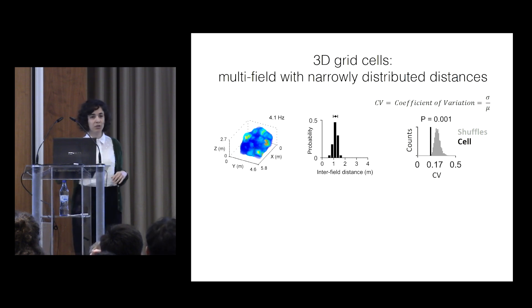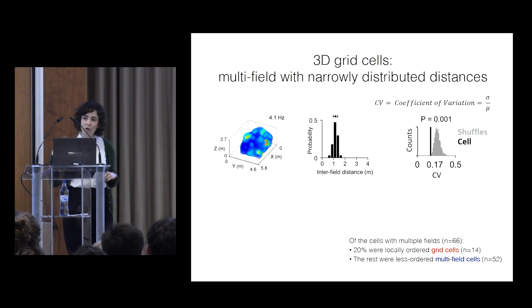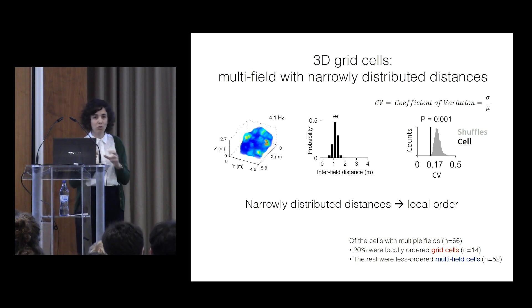And this cell's coefficient of variation is significantly lower than that of a thousand shuffles, where we just randomly shuffle the spikes. Out of all the cells that we have with multiple fields, 20% of them significantly had a narrow distribution of distances.